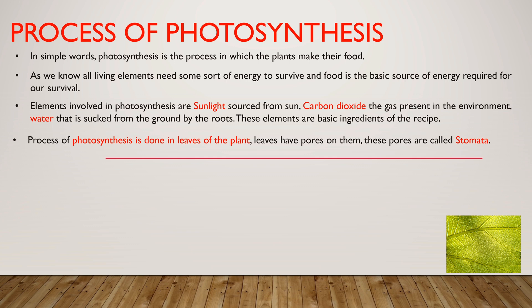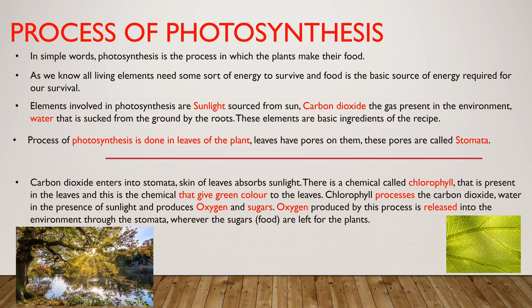The process of photosynthesis is done in the leaves of the plant. Leaves have pores on them — these pores are called stomata. Carbon dioxide enters into the stomata, and the skin of the leaves absorbs sunlight. There is a chemical called chlorophyll present in the leaves, which gives the green color to the leaves. Chlorophyll processes the carbon dioxide and water in the presence of sunlight, and produces oxygen and sugars.